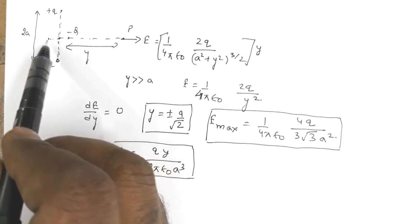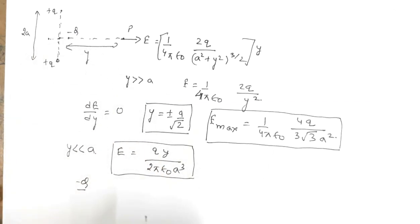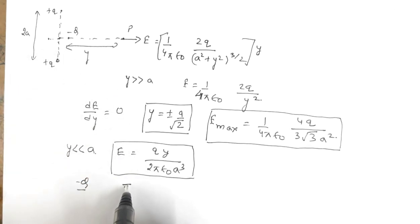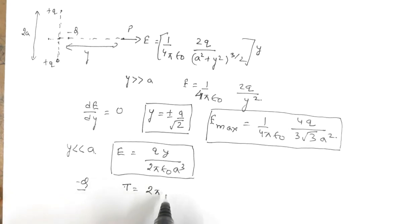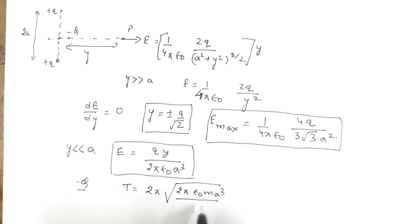...will start oscillating. The period of oscillation will be given by T = 2π√(2πε₀ma³ / qQ). How do you get this?